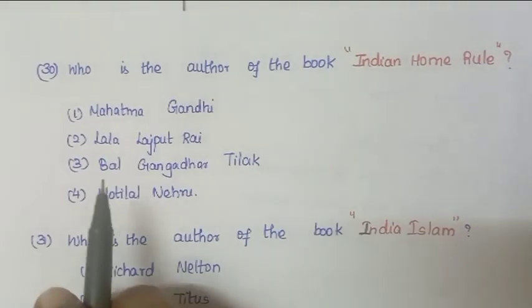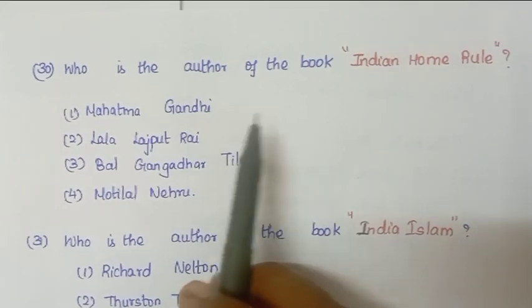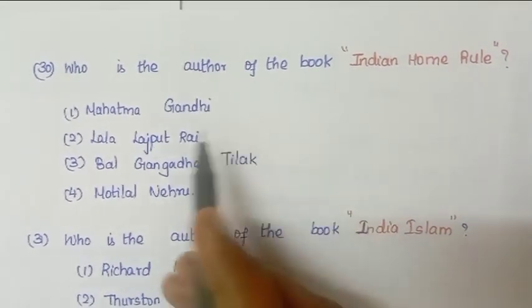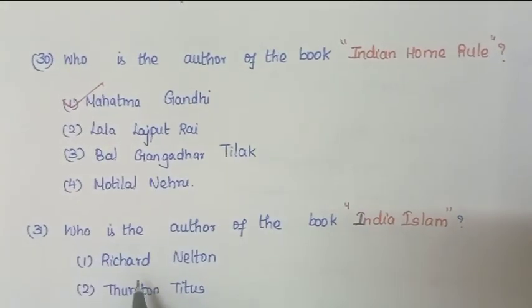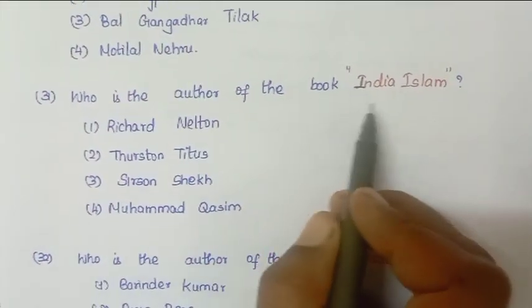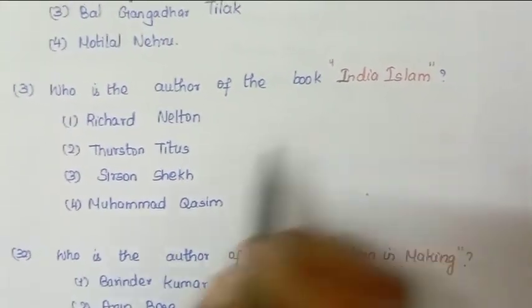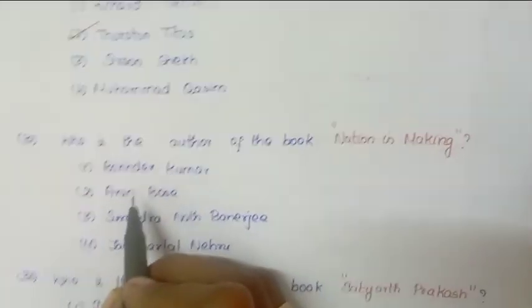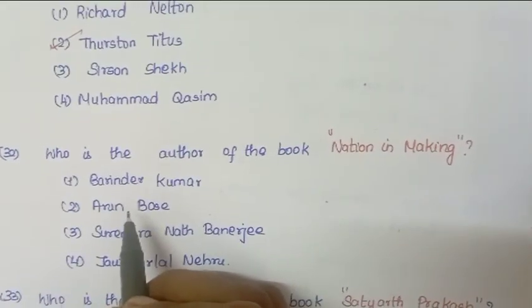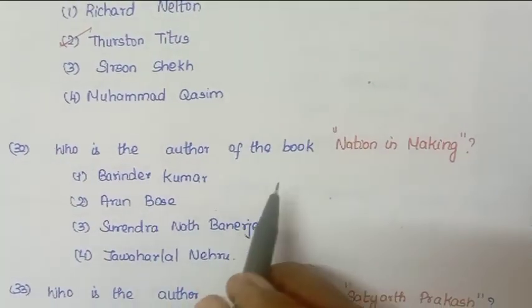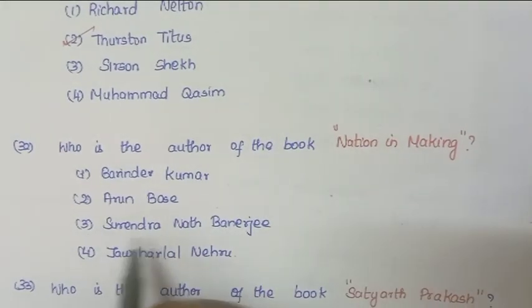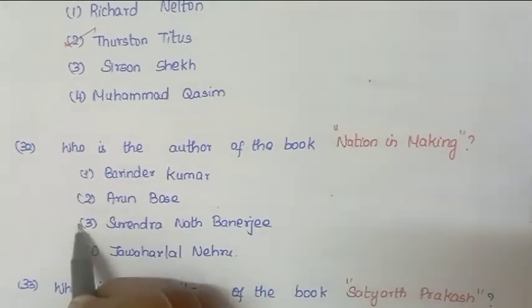Next question: Who is the author of the book Indian Home Rule? Answer is Mahatma Gandhi. Next question: Who is the author of the book India Islam? Answer is Tustentitis. Next question: Who is the author of the book Nation in Making? Answer is Surendranath Banerjee.